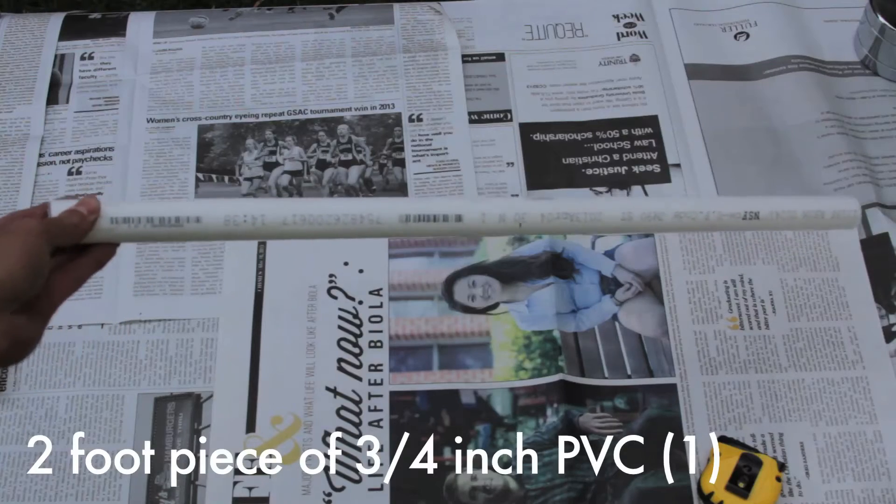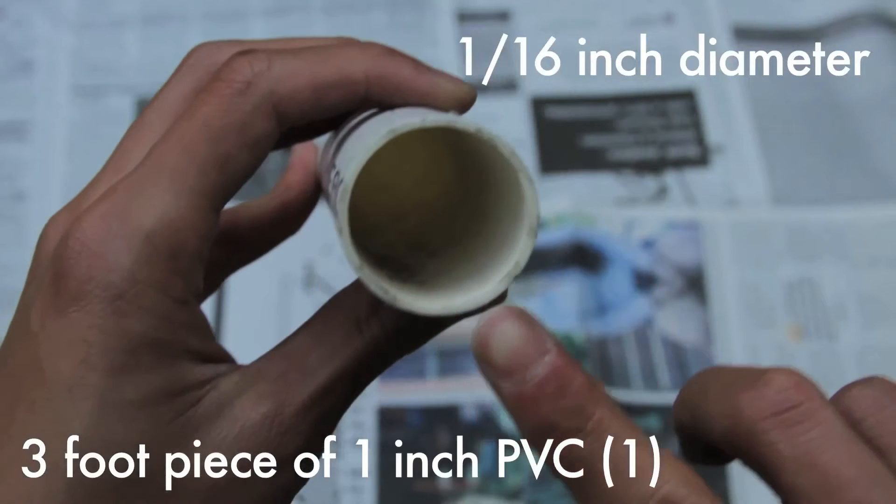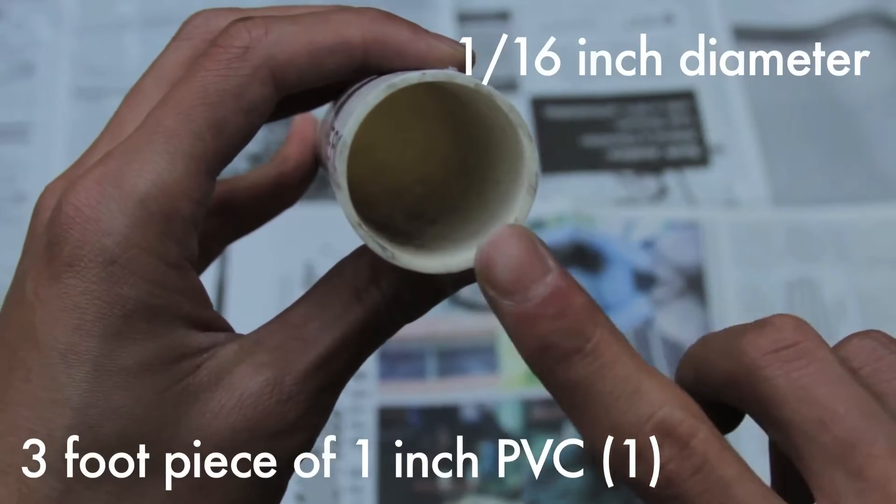First off, you'll need a 2 foot piece of 3/4 inch PVC. Then you'll need a 3 foot piece of 1 inch PVC with a 1/16 inch diameter.